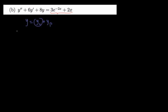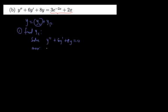I'm going to start by finding yc, the complementary function. Finding yc simply implies solving the associated homogeneous equation, which means solving y'' + 6y' + 8y = 0. To solve this, we start by writing the auxiliary equation: m² + 6m + 8 = 0.